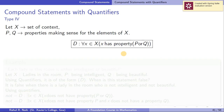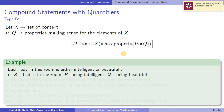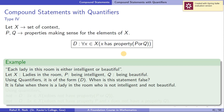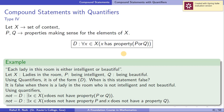Type 4: Replace AND by OR with universal quantifier. For every x in X, x has property P or Q. Example: 'Each lady in this room is either intelligent or beautiful.' The negation: there exists x in X such that x does not have property P or Q. Using the rule that negation of P or Q is (not P) and (not Q), not of D is: there exists x in X such that x does not have property P and x does not have property Q.